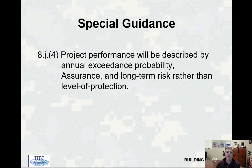Project performance will be described by annual exceedance probability (AEP), assurance or conditional non-exceedance probability, and long-term risk rather than level of protection. You will hear people talk about level of protection; however, you don't want to use level of protection when describing your project performance. You want to use AEP, assurance, and long-term risk.